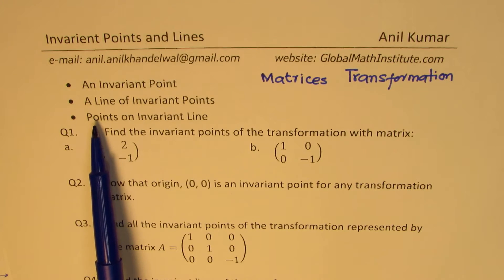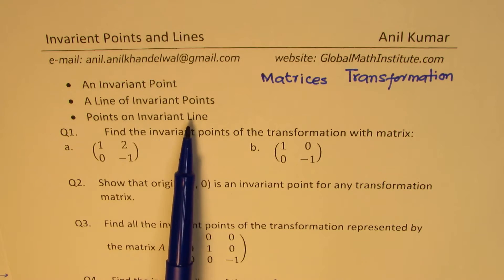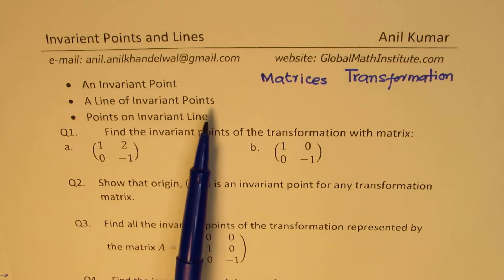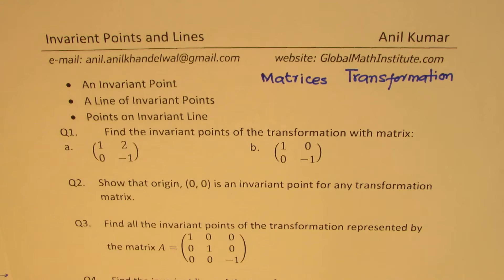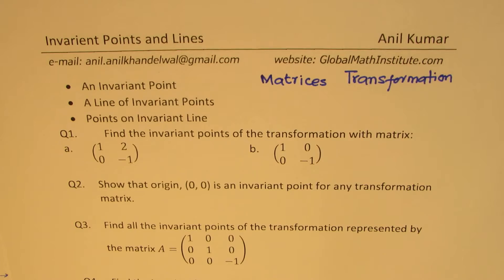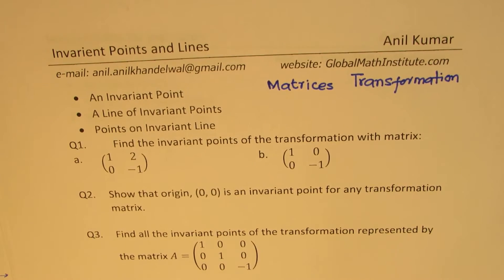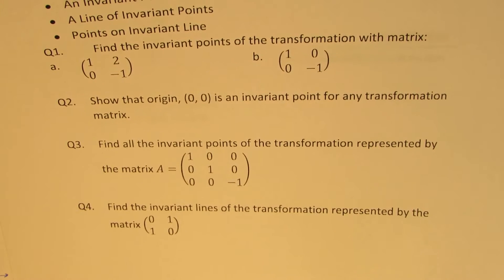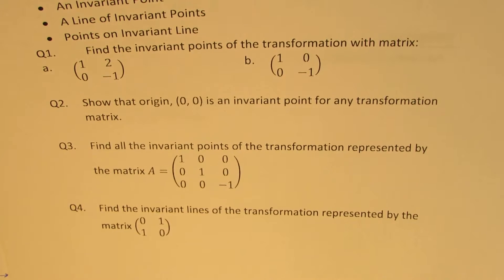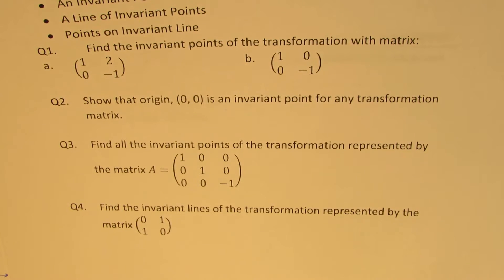But in the third case, which is points on an invariant line, points move, but they move to corresponding positions on the line itself. So the line remains the same; however, the points move on that line. After understanding this concept, we'll take four questions — three of them are visible to you. We'll consider R2 and R3, and then take the fourth question, which will address points on an invariant line.